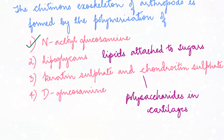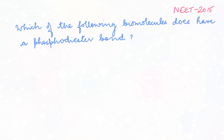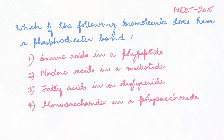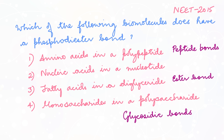The next question is also from NEET 2015: which of the following biomolecules has a phosphodiester bond? Amino acids in a polypeptide; nucleic acids in a nucleotide; fatty acids in a diglyceride; monosaccharides in a polysaccharide. Amino acids are bonded by peptide bonds; fatty acids in a diglyceride are bonded through ester bonds; monosaccharides in a polysaccharide are bonded through glycosidic bonds. So the answer is option 2: nucleotides in nucleic acids are bonded through phosphodiester bonds.